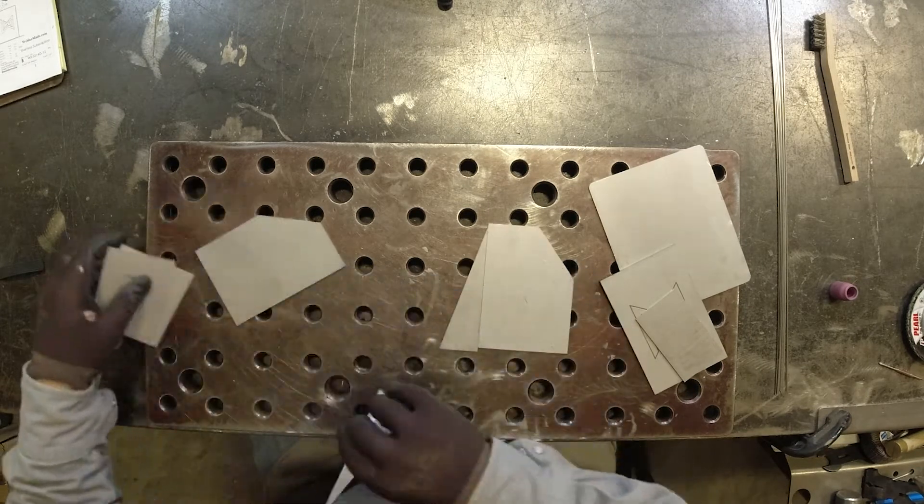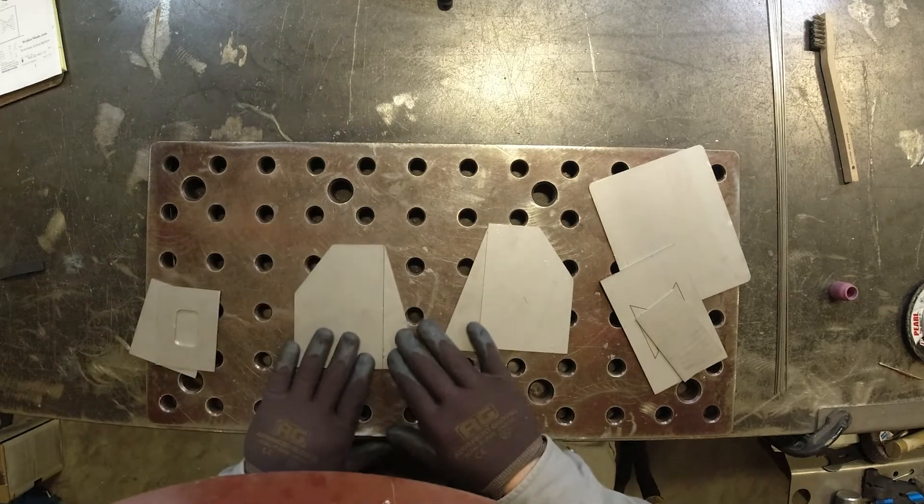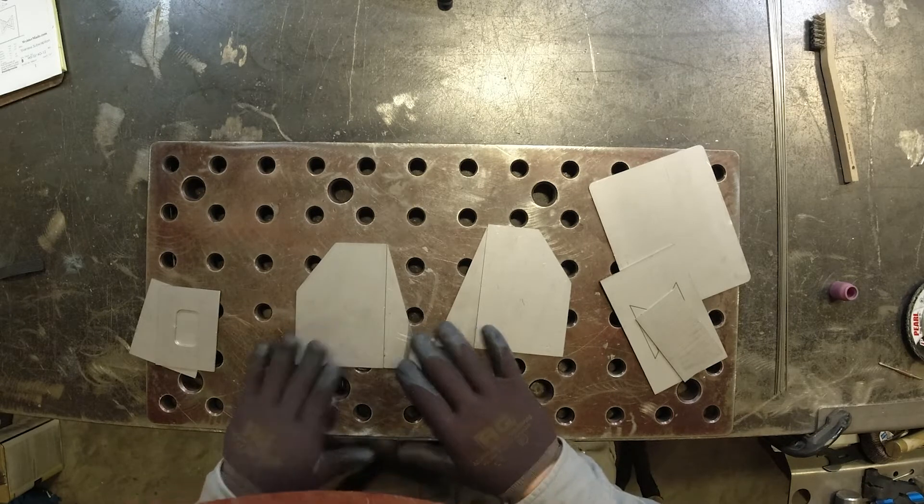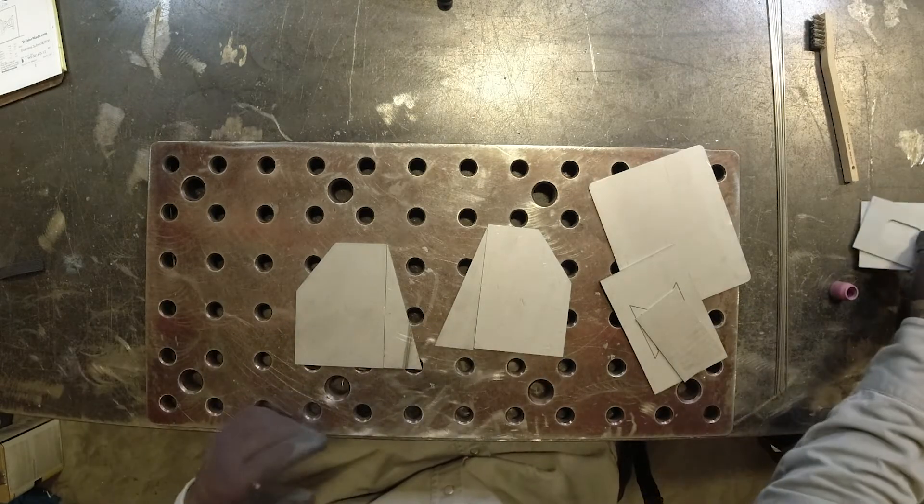We're going to start with tacking anything that's on the same plane, which is going to be parts two and four. You're going to have two sets. Make sure they're facing opposite directions for one on each side of the project.